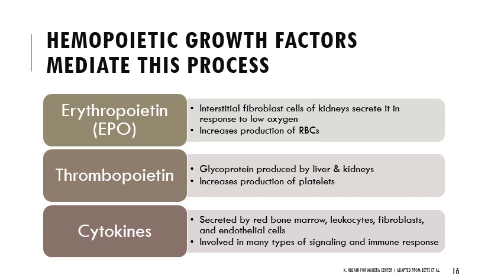When thinking about how this process is controlled, there are a few key hematopoietic growth factors. EPO — erythropoietin — increases the production of red blood cells and is secreted by the kidneys in response to low oxygen. Thrombopoietin makes platelets — thrombocytes — and is a glycoprotein produced in the liver and kidneys. Cytokines are more general signaling factors involved in many types of signaling and immune response, secreted by red bone marrow, leukocytes, fibroblasts, and endothelial cells.